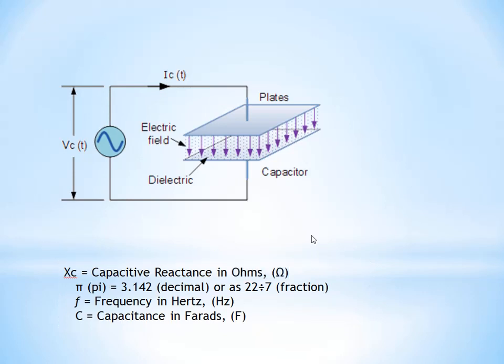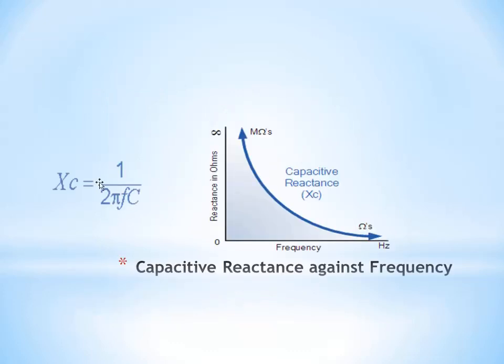Like resistance, we measure capacitive reactance in ohms. Let us see the relationship between capacitive reactance and frequency. The equation shows that capacitive reactance Xc equals 1 divided by 2πFC.